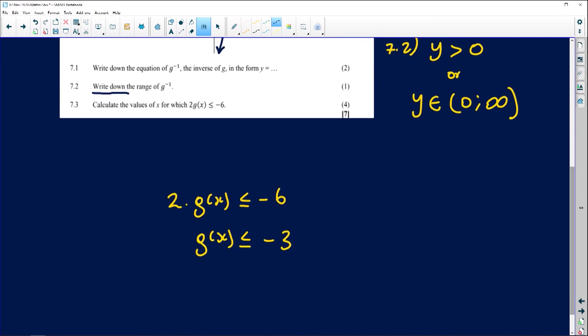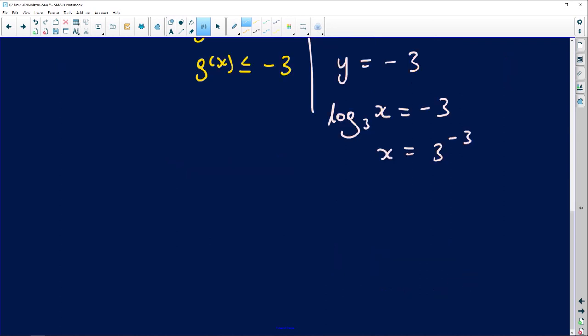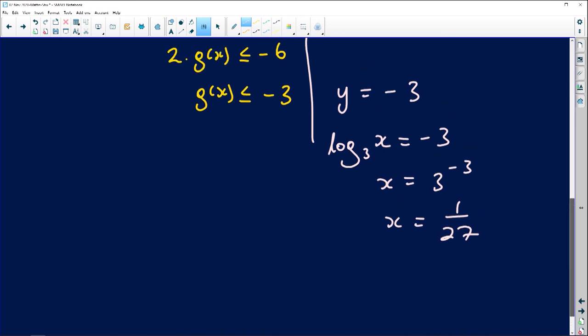So what I'm going to do is in order to find what that x value is, I'm going to convert this to an equation. So what I'm simply going to do, I'm going to say let y be equal to negative 3. Y is the graph of g, which is equal to what, which is basically given by the logarithm with the base of 3 of x equal to negative 3. Then you're solving for x here. Obviously your x is going to be 3 to the power of negative 3, which you guys will agree with me that it's going to definitely be 1 over 27.